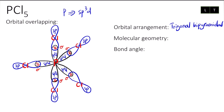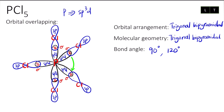So this is the orbital overlapping for PCl₅. The molecular geometry stays as trigonal bipyramidal because there is no lone pair at the central atom, so it is the same as the orbital arrangement. For the bond angles in trigonal bipyramidal, there are two angles: 90 degrees and 120 degrees. So I'll label from here to here as 120 degrees, and from here to here as 90 degrees. That's settled for PCl₅.